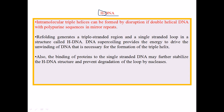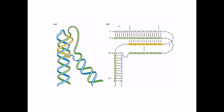H-DNA structures contain polypurine sequences in mirror repeats. As we can see in this picture, H-DNA is essentially a triple helix DNA structure — a slight modification of a triple helix — formed due to intra-strand interactions.